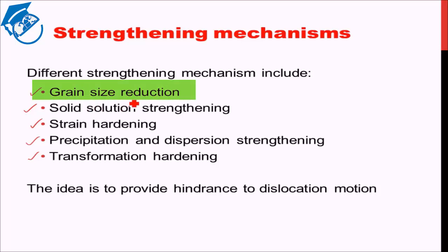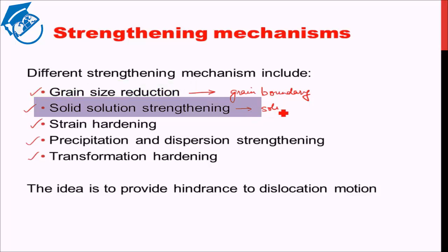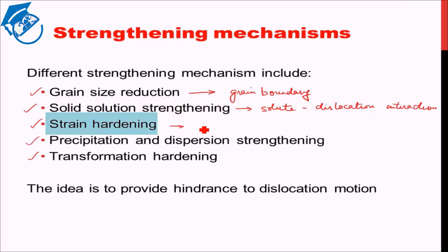Grain size reduction: grain boundaries will restrict the dislocation motion — so this is basically grain boundary hindrance to dislocation motion, thereby increasing strength. Solid solution strengthening is solute-dislocation interaction. Basically what is happening is the solute and dislocation will interact and that will try to hinder the motion of the dislocation.